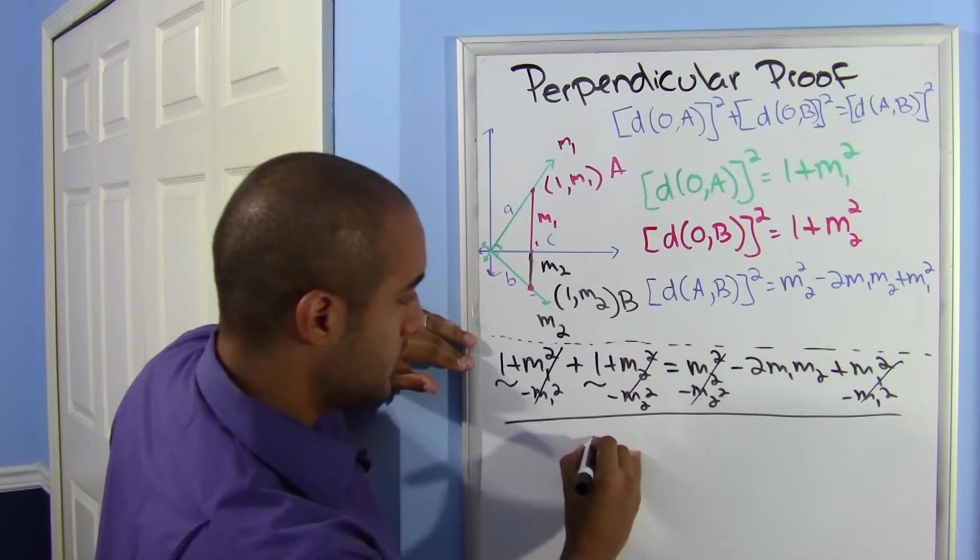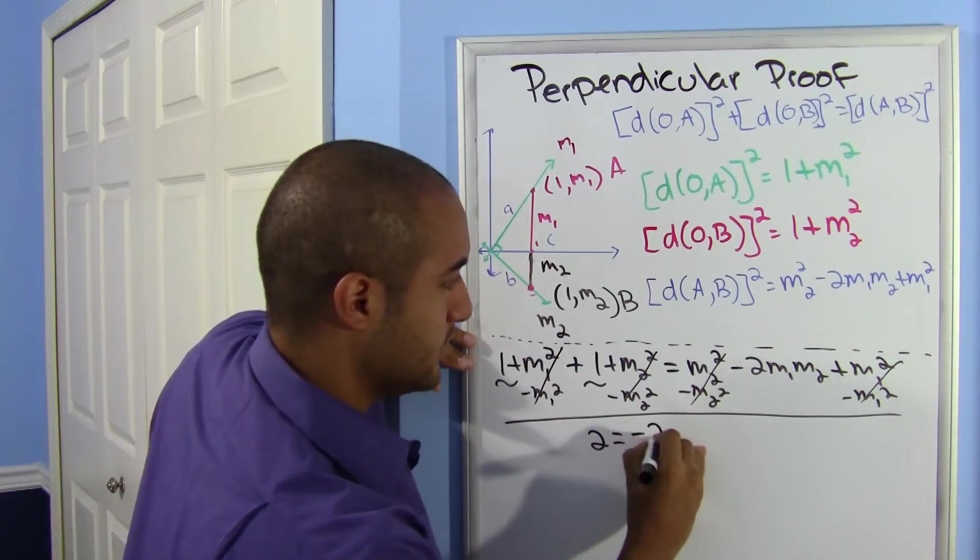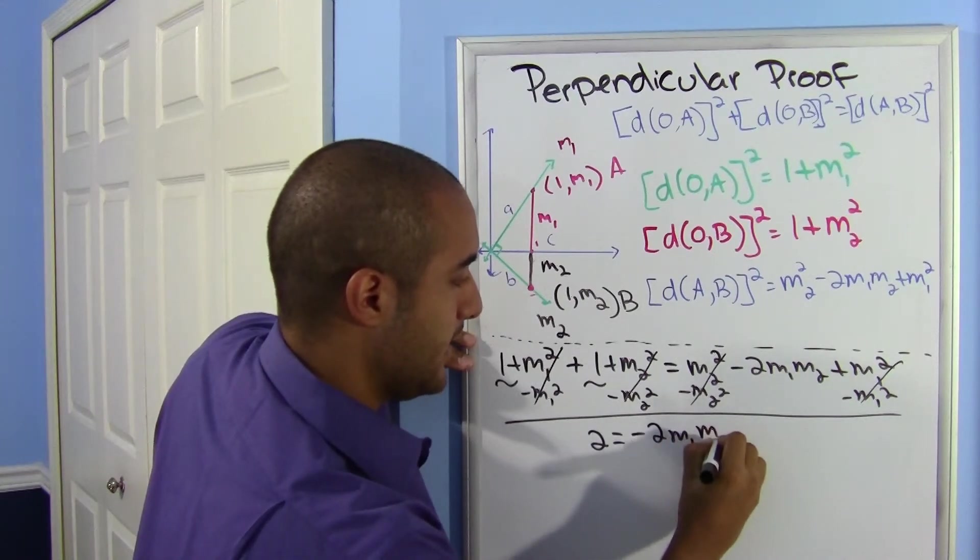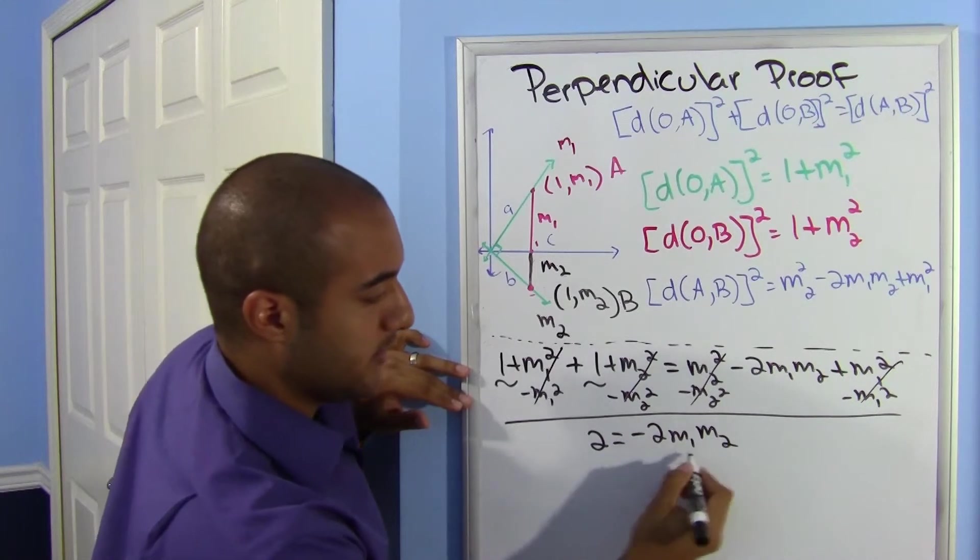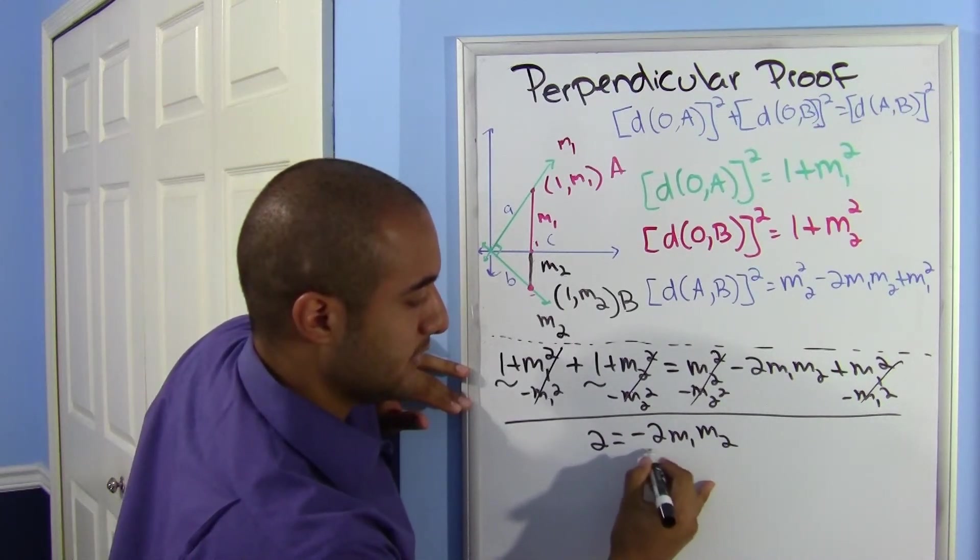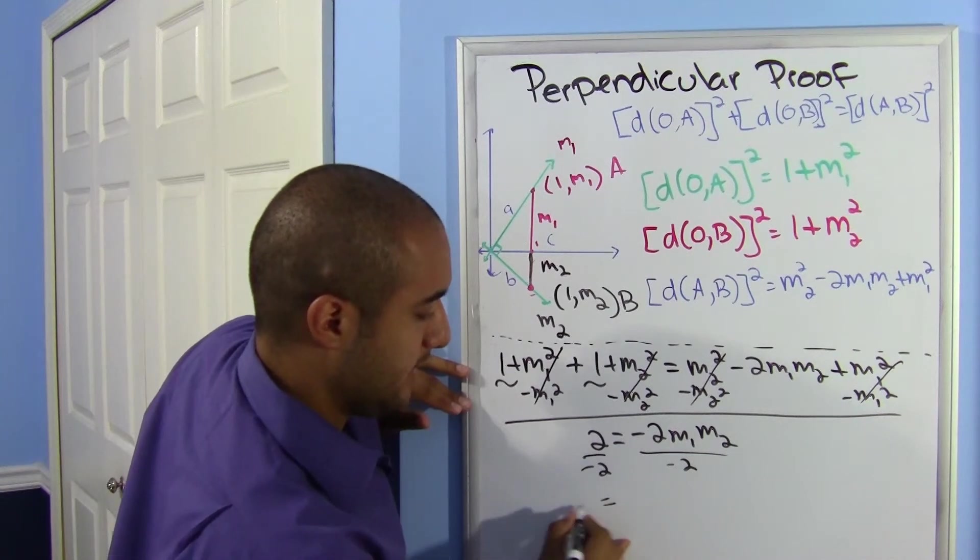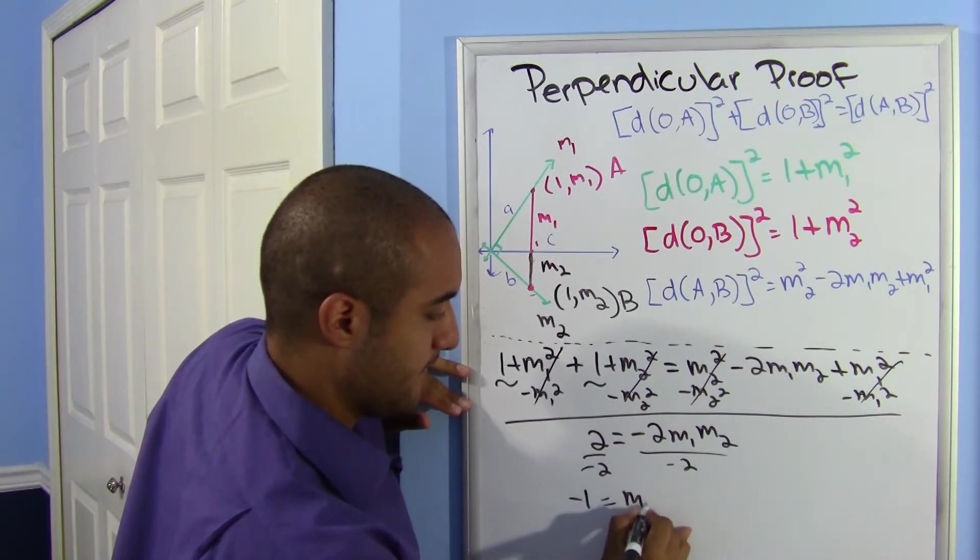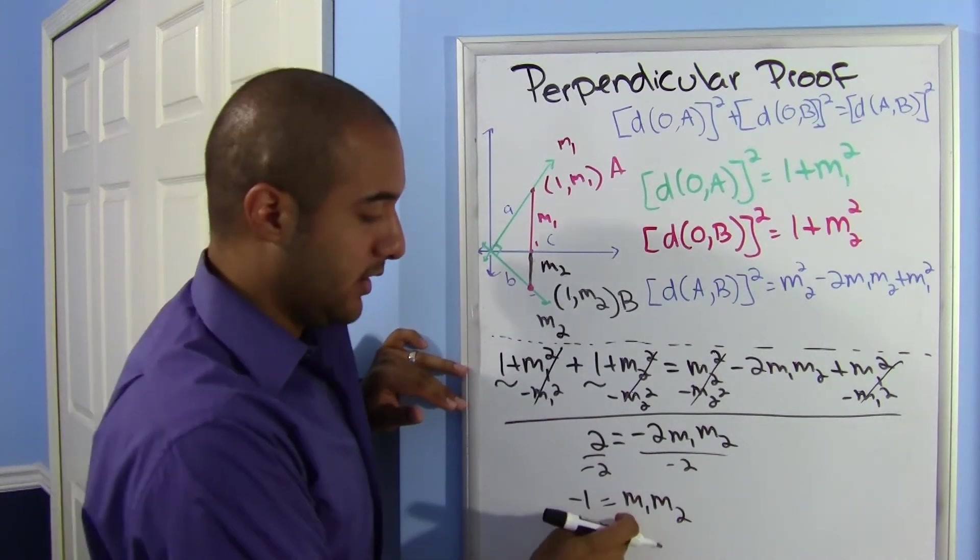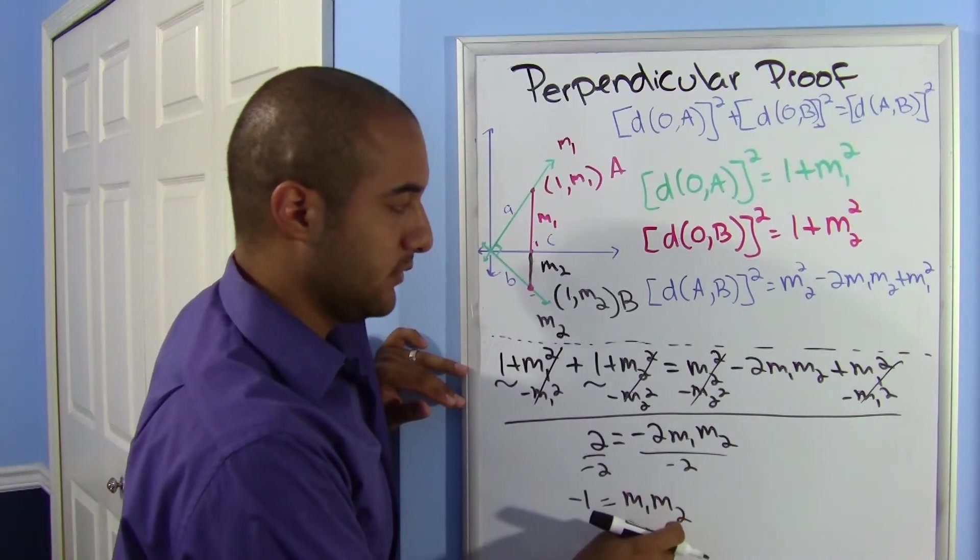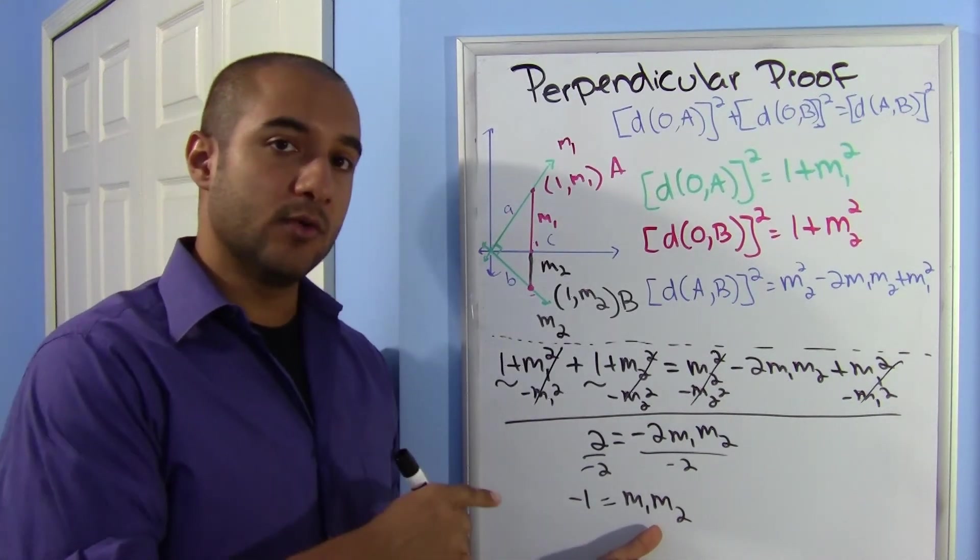I'm combining these two, so I get 2 is equal to -2m1m2. I want to get these two by themselves, so I'm going to divide by negative 2, divide by negative 2, and this is: negative 1 is equal to the product of m1 times m2.